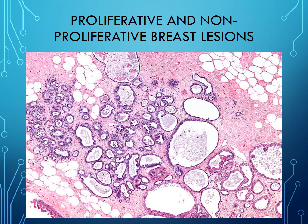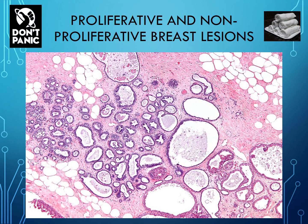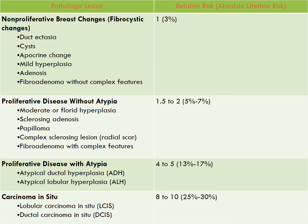Now let us move on to proliferative and non-proliferative lesions of the breast. The most important thing is not to panic — although this looks horrible, it's maintaining its normal terminal ductal lobular units and is benign. Depending on what type you have, these lesions give you a different relative risk of developing cancer. Non-proliferative fibrocystic change has a low relative risk; proliferative disease without atypia is about 1.5 to 2 times the risk; proliferative disease with atypia is 4 to 5 times; and carcinoma in situ carries quite a high risk.